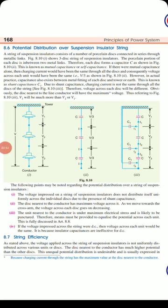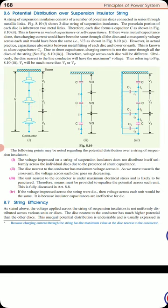Regarding potential distribution over a string of suspension insulators: the voltage impressed on the string does not distribute uniformly across individual disks due to the shunt capacitance C1. The disk nearest to the conductor has maximum voltage across it. As we move towards the cross arm, the voltage across each disk goes on decreasing. The unit nearest to the conductor is under maximum electrical stress.